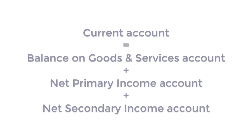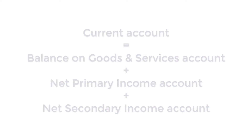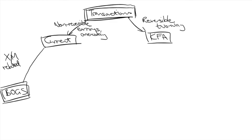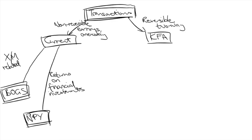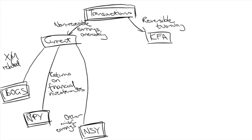Now let's go deeper with the current account. There are sub-accounts to categorize these non-reversible earnings: Balance on Goods and Services (BOGS), also known as the trade balance, records proceeds from selling exports and buying imports. Net Primary Income (NPY), aka the primary income balance, records returns on financial investments such as interest repayments, dividends, or profits. Net Secondary Income (NSY), aka the secondary income balance, records miscellaneous earnings not in the above subcategories, such as insurance payouts and pensions.